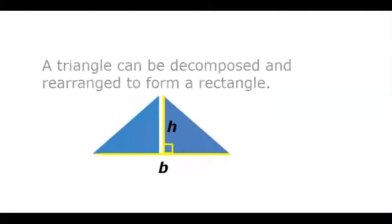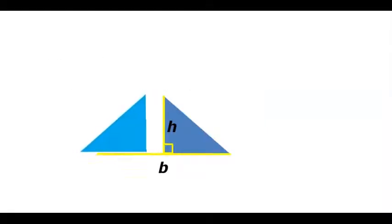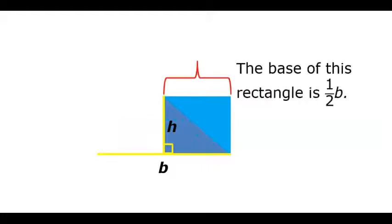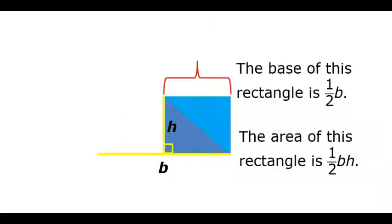A triangle can be decomposed and rearranged to form a rectangle. The base of this rectangle is 1/2 B. That means that the area of this rectangle is 1/2 × B × H.